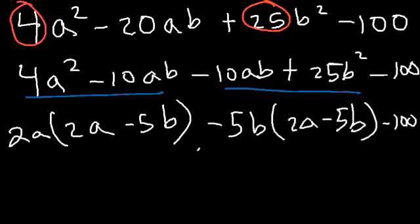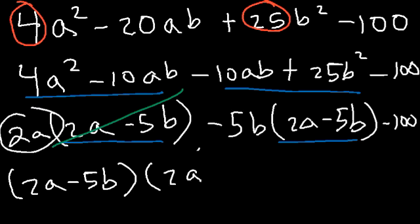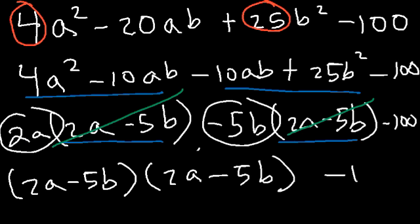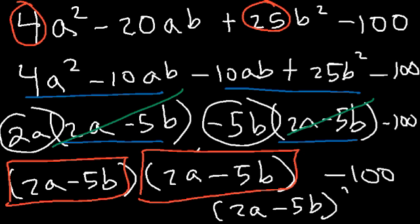Now we can factor out another GCF of (2a − 5b). From the first group we have 2a remaining, and from the second group we have negative 5b remaining. So the result is (2a − 5b)(2a − 5b), which is (2a − 5b) squared, minus 100.